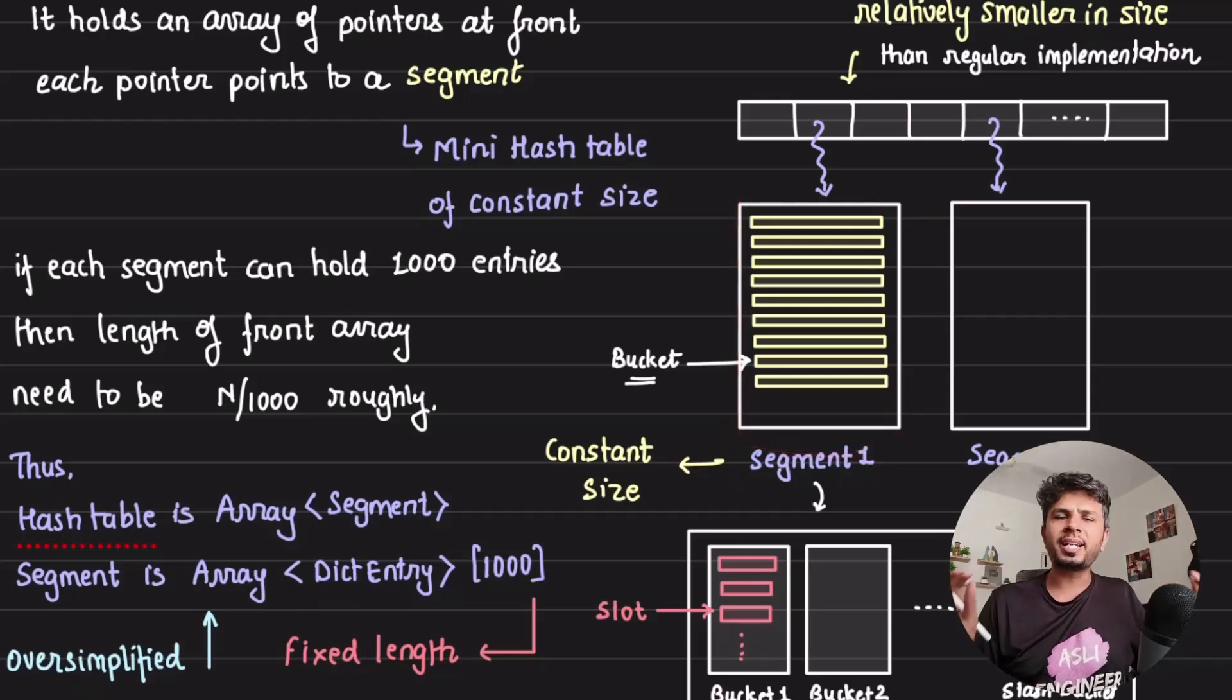The whole idea is simple. If each segment, assume my one segment can hold 1000 entries. Because it is constant size, I would exactly know how many entries it can hold. Assume it holds 1000 entries.